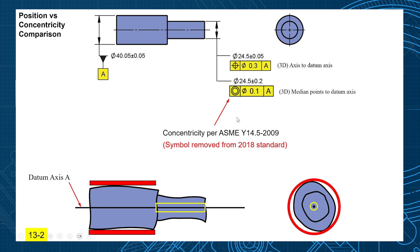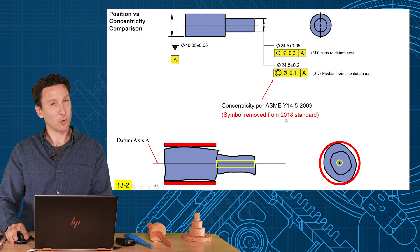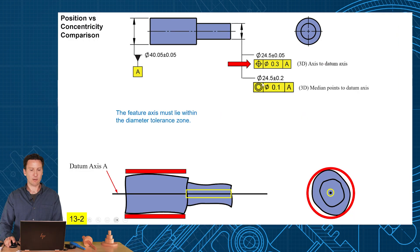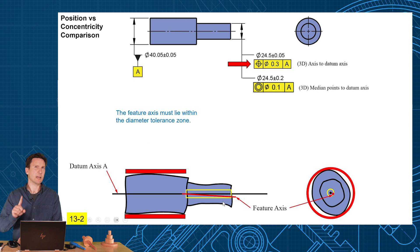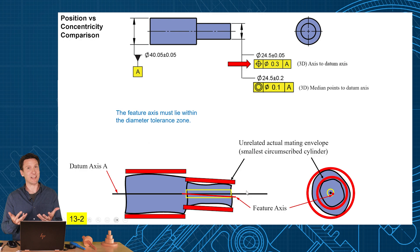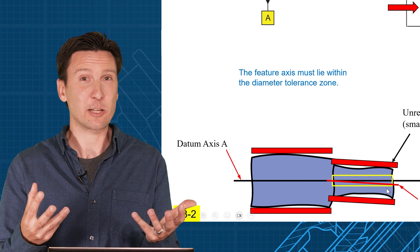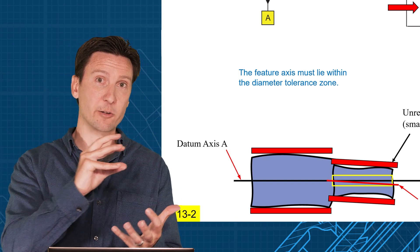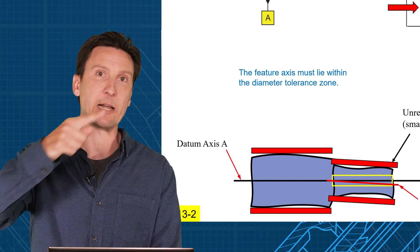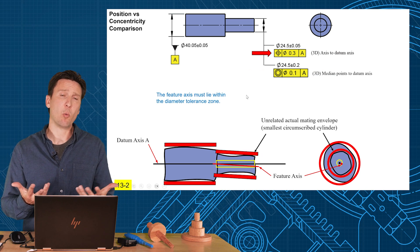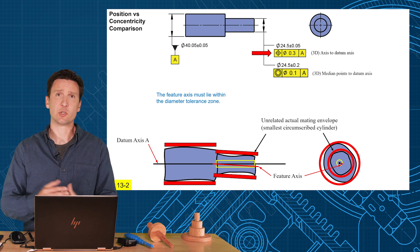I'm going to have to use the 2009 description of concentricity because in ASME Y14.5 2018, this symbol was removed — for good reasons, as you'll find out. Let's start with position first. Position is pretty straightforward: the feature axis must lie within a diameter tolerance zone. This diameter of 0.3 is a cylinder that extends the length of the feature, and the axis of that feature has to lie within it. The key is how do we find the axis of the shaft? It's the highest points — smallest circumscribed cylinder, also known as the unrelated actual mating envelope. The highest points determine where that feature axis is, and in most cases, that's what you want. When a mating part goes on, it fits onto those highest points. This is what most people want: one axis coaxial to the other axis. So that's a good job for position tolerance.